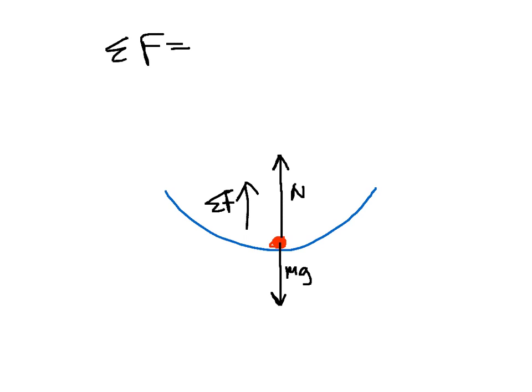The normal is in the same direction as the net force, so it will take a positive sign. The weight force is in the opposite direction — it points down relative to the net force — and so it takes a negative sign. So we have the expression: mv squared on r equals N minus mg. From that expression, lots of things can be found, such as the velocity and r. The apparent weight of a person in this situation will be equal to N, and so the number of g-forces or your apparent weight at the bottom of that loop can be calculated from this expression.